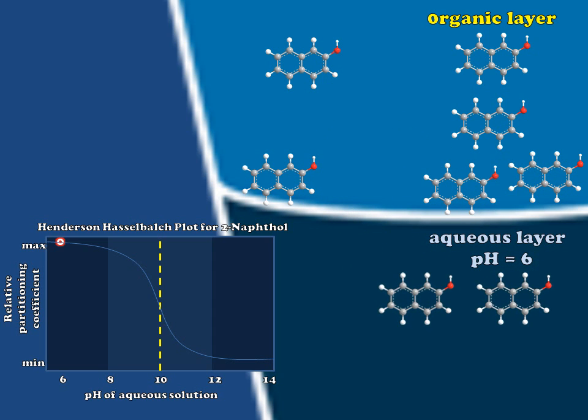What this means is that a very small amount may partition into the water, but that it is not optimized. So if it were our goal during this extraction to move our naphthol out of the organic layer, this would be a very poor choice. If, on the other hand, it was necessary for us to leave as much naphthol as possible in the organic layer, this may be the correct or a good choice of aqueous layer pH.